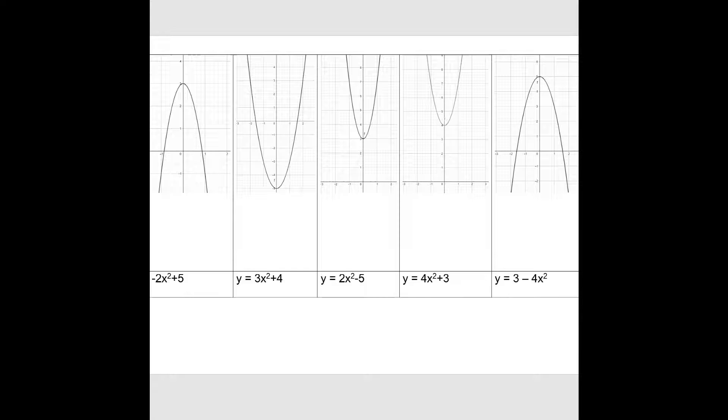Let's go through the answers. So, y equals minus 2x squared plus 5. We have a minus in front of the x squared, which is going to give us a sad quadratic. And the plus 5 will tell us the y coordinate of the turning point. Only the first and last quadratics are sad. And the last one has a turning point with a y coordinate of 5. So, I can match up the first equation with the last graph.